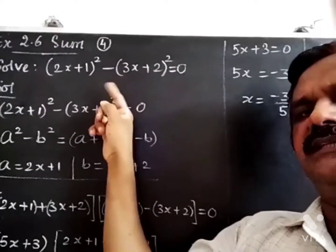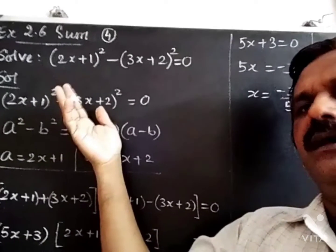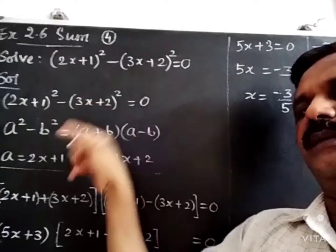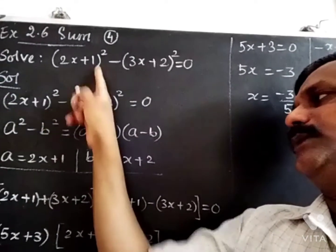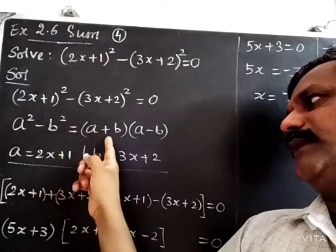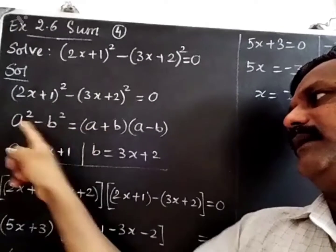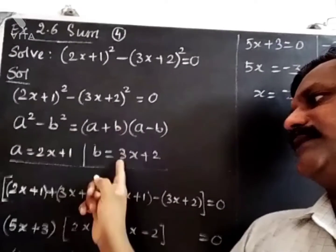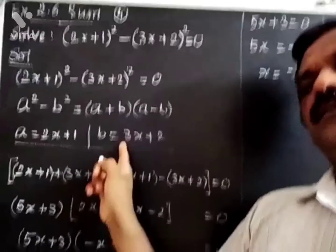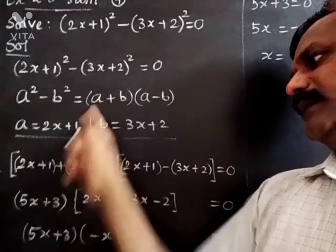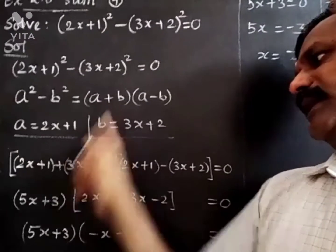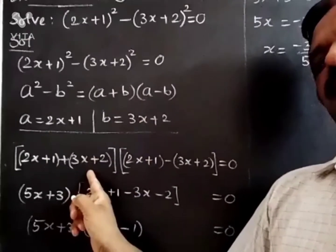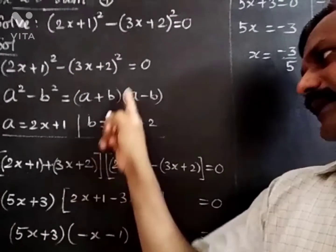The A squared minus B squared formula is easy. If we ask the question: A is (2x + 1) and B is (3x + 2). So A squared is (2x + 1) squared and B squared is (3x + 2) squared.